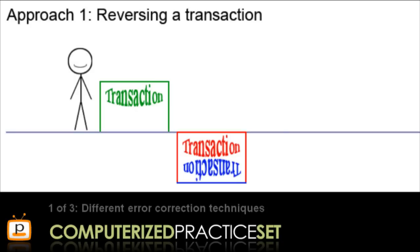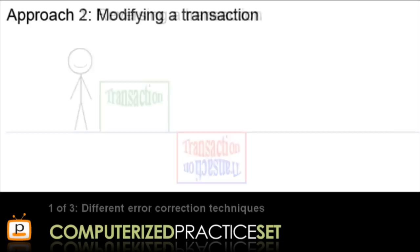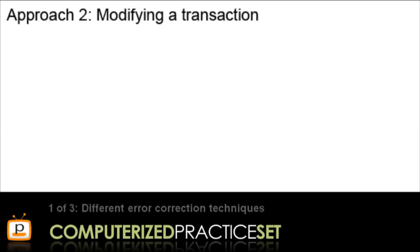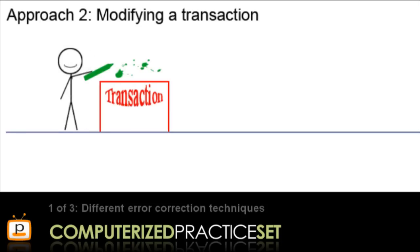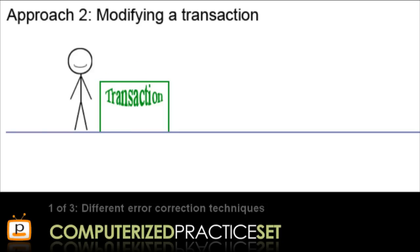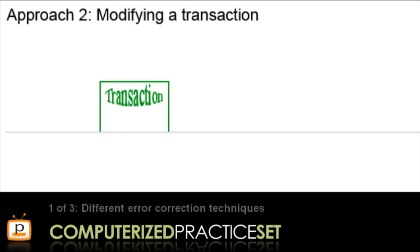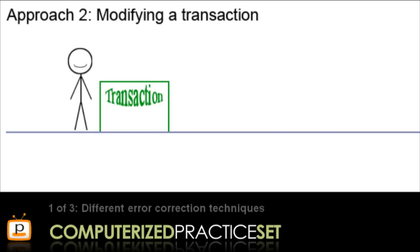Now that we've covered the first approach, let's look at the second approach: modifying the original transaction. Here is Chris and the wrong transaction again. This time, Chris is going to make changes directly to this wrong transaction in order to correct it. Once the changes are made, the transaction is now correct. Notice that when modifying the original transaction, there is only ever one component — the single transaction itself — and that one transaction changes its character during the editing process.